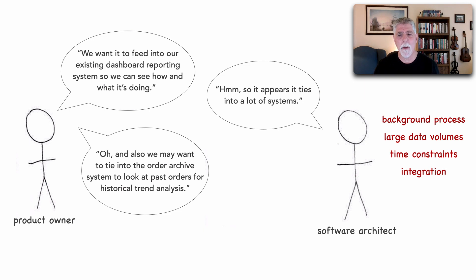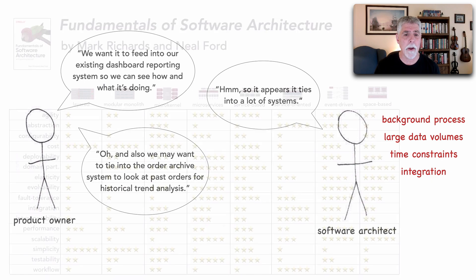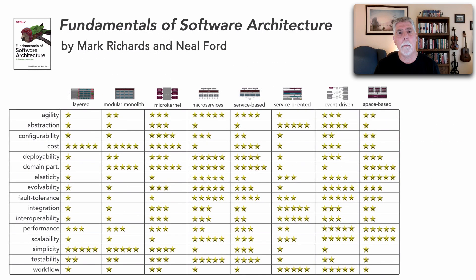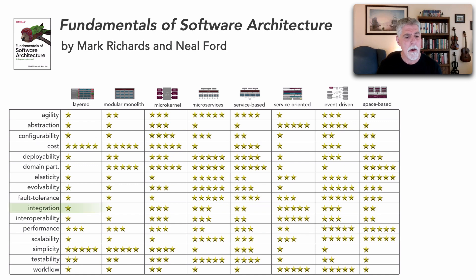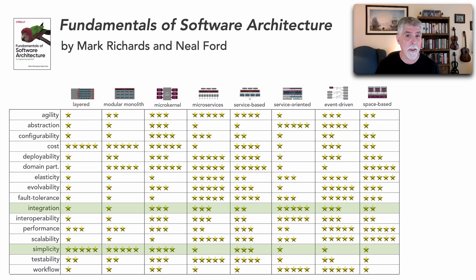With this conversation done, the architect has extracted not only the nature of the application but also some of the business concerns — especially those time constraints. Now we can go back to the star rating chart and take a look at what's important to help us make a decision. For example, integration is important and it's going to have to be a fairly simple solution in order to get it done in six weeks.